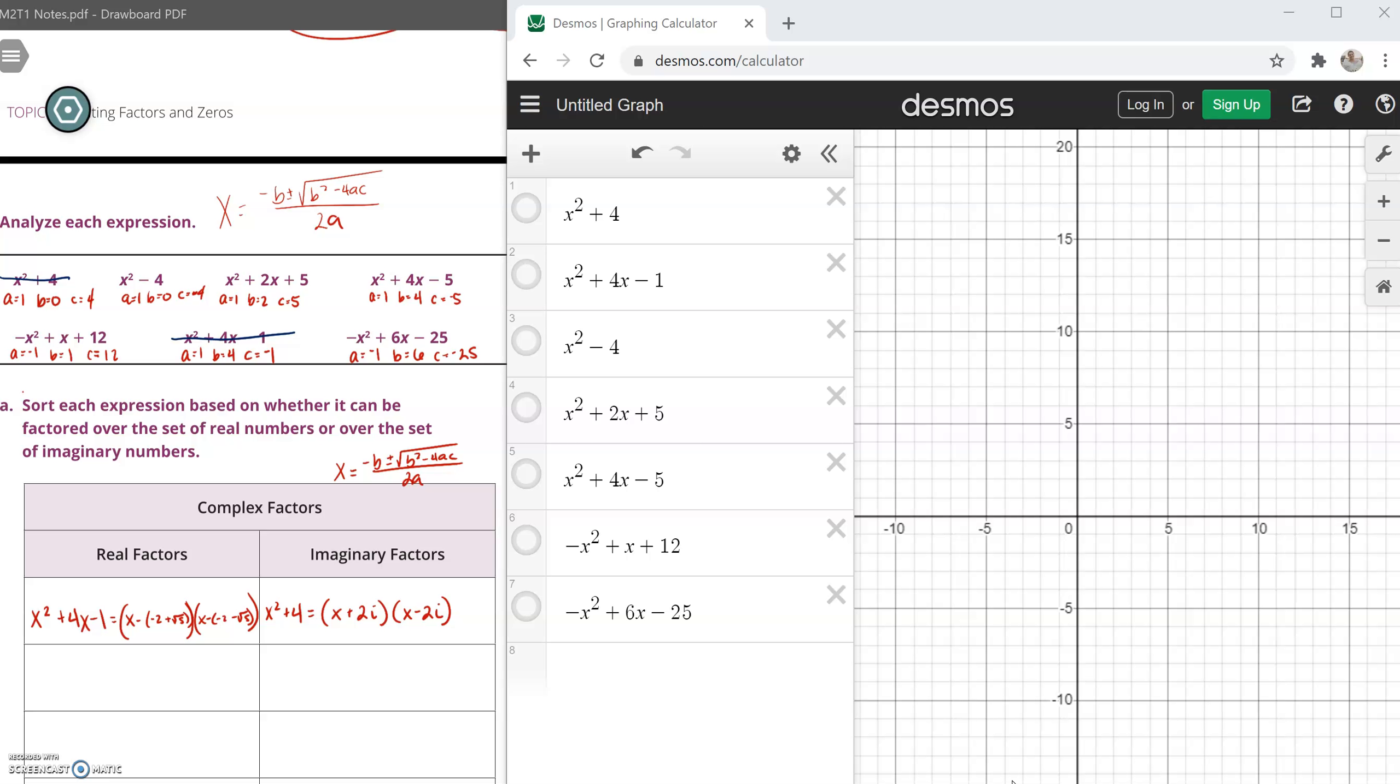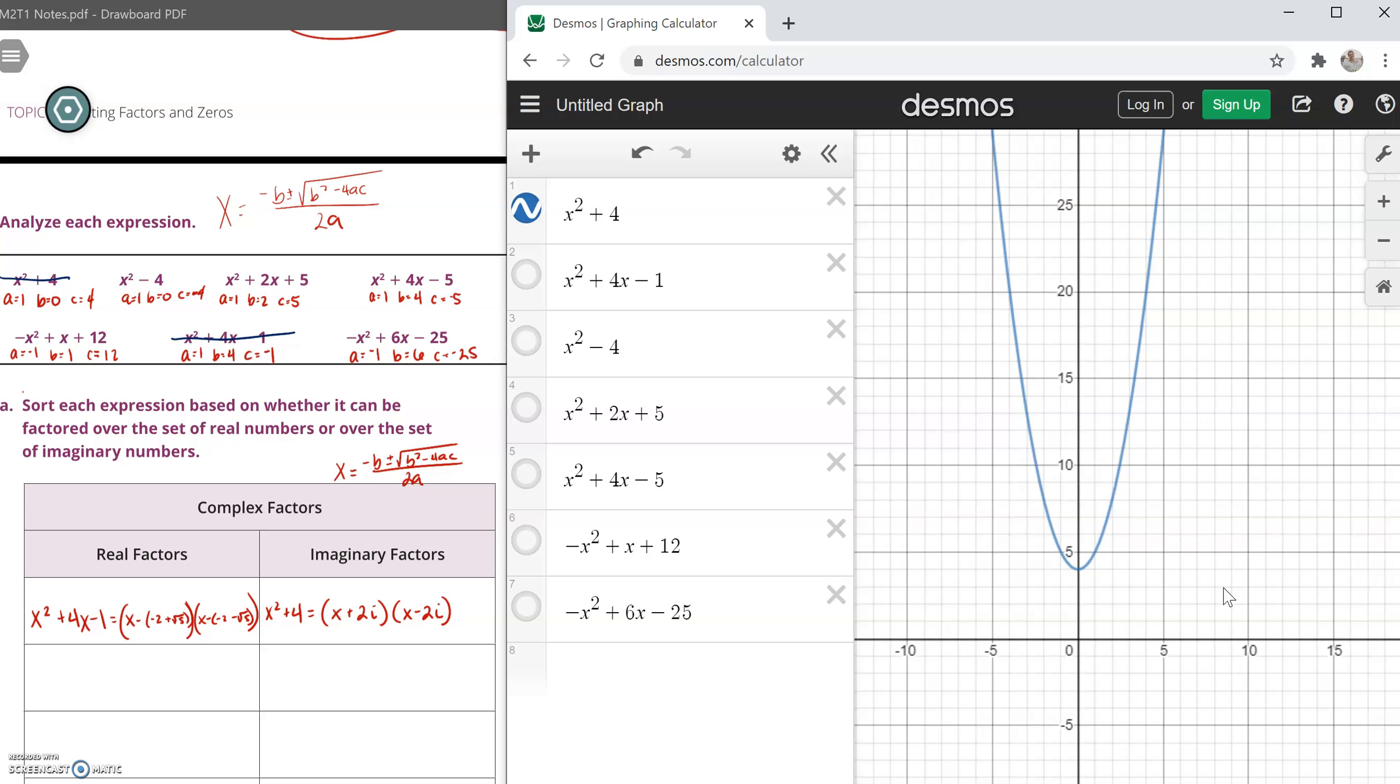Remember that first one we did, x squared plus four. We had imaginary factors. So what does that mean for the graph? Well let's look. So what do we notice about this graph? It's opening upwards. The vertex looks like it's at four, which would make sense from what our equation is.